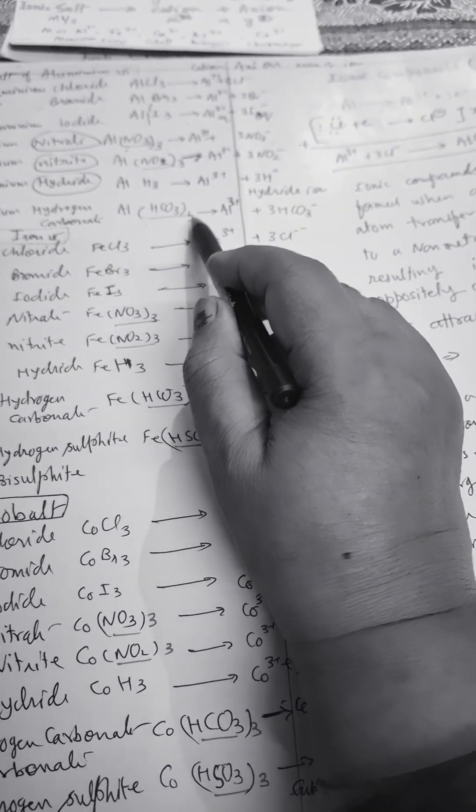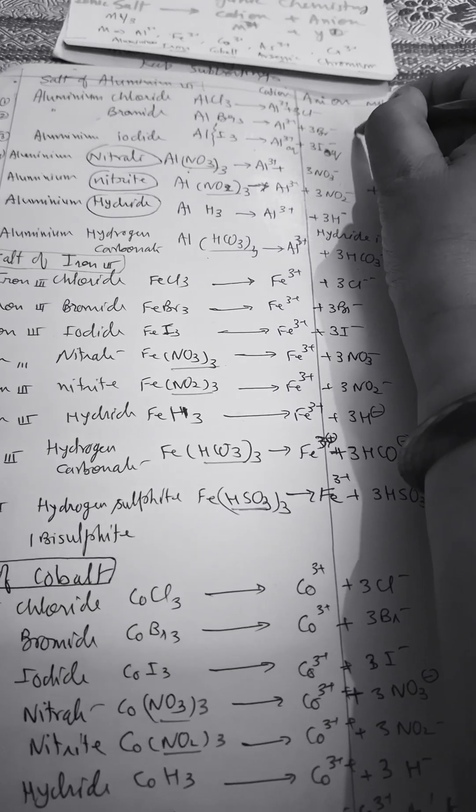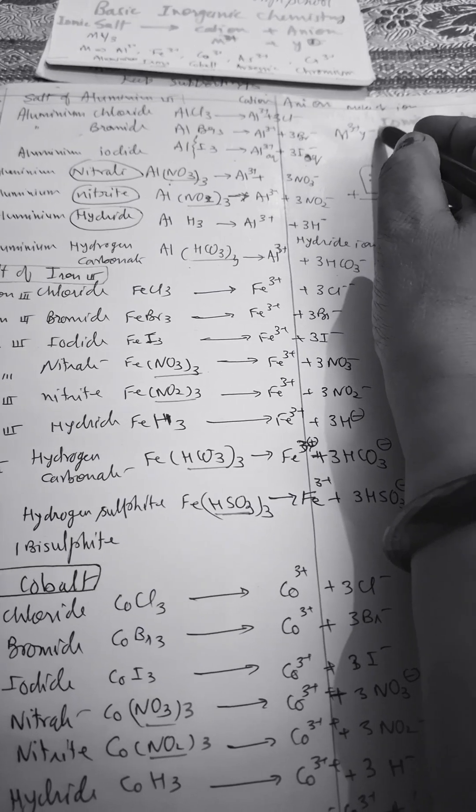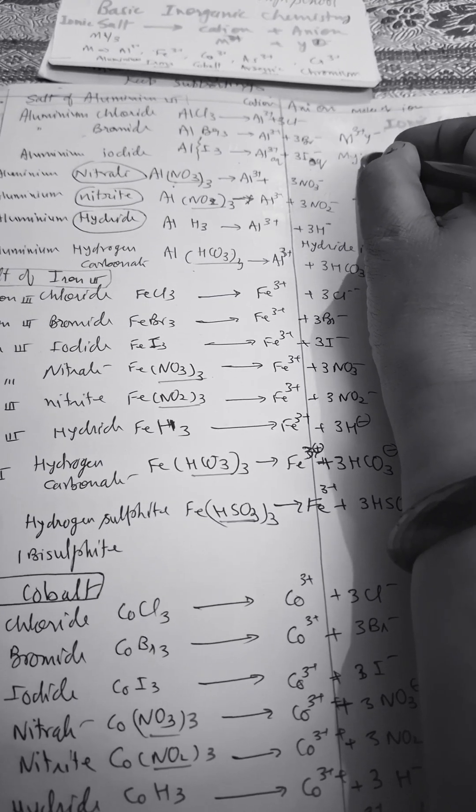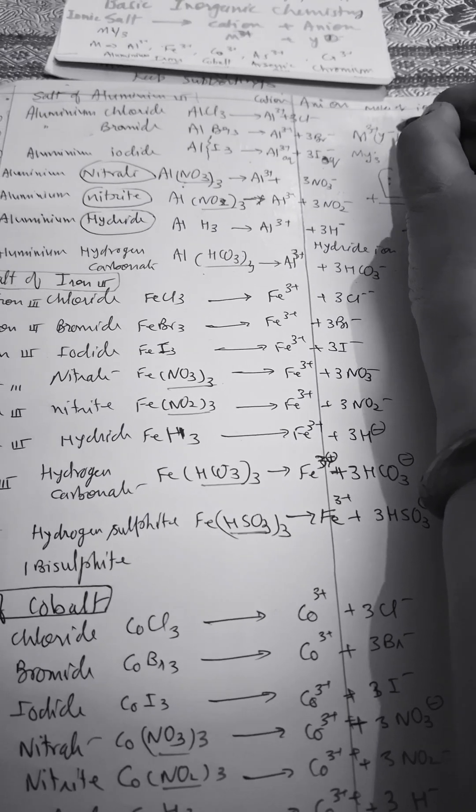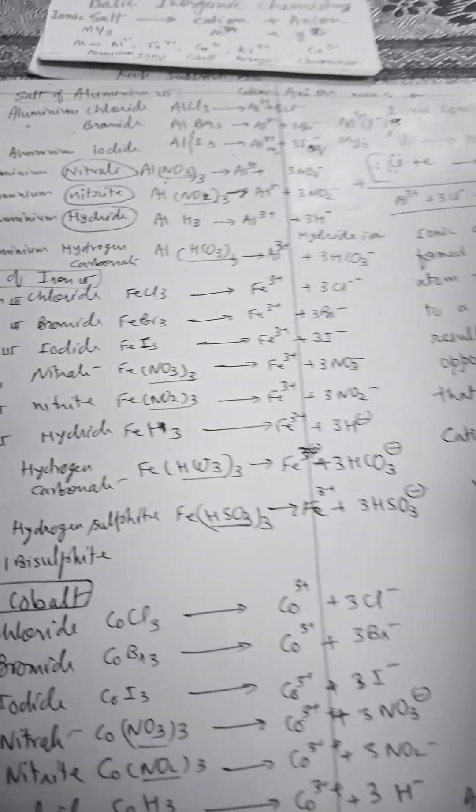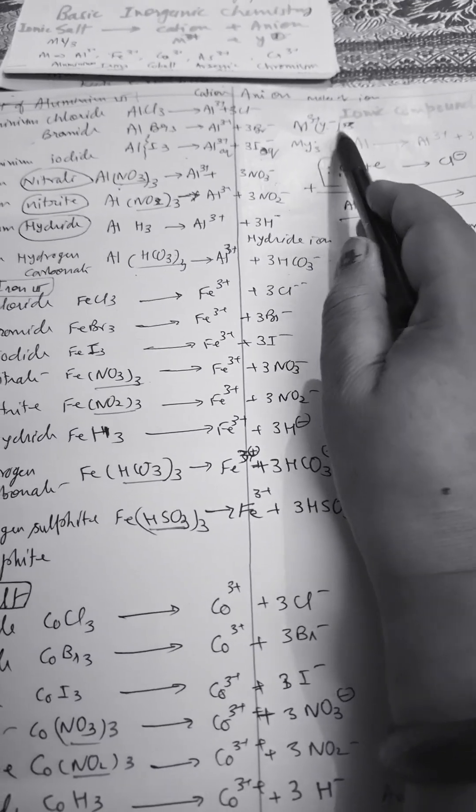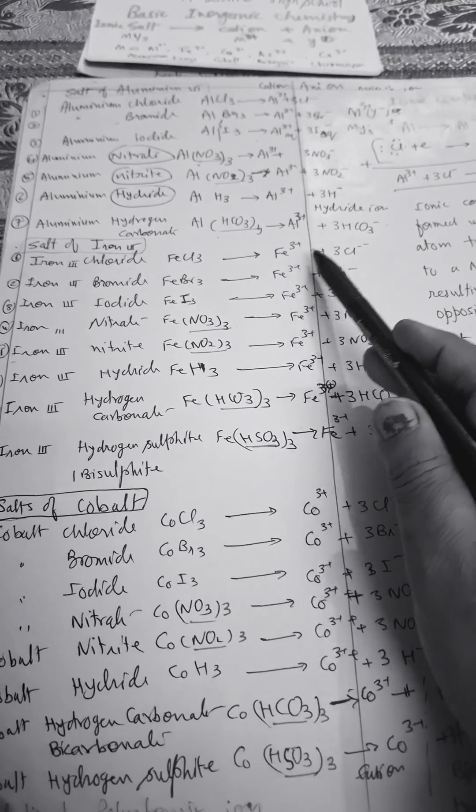Clear. Here I have deliberately selected M³⁺ and Y⁻. So if Y⁻ will be there, then the formula will be like this: MY₃, okay. Because this should be multiplied by three. Y should be multiplied by three, or I will write at the bottom, that's better. So M³⁺ is here, so three negative, three positive charge is balanced. So you write down all this and then you can do yourself also for practice.